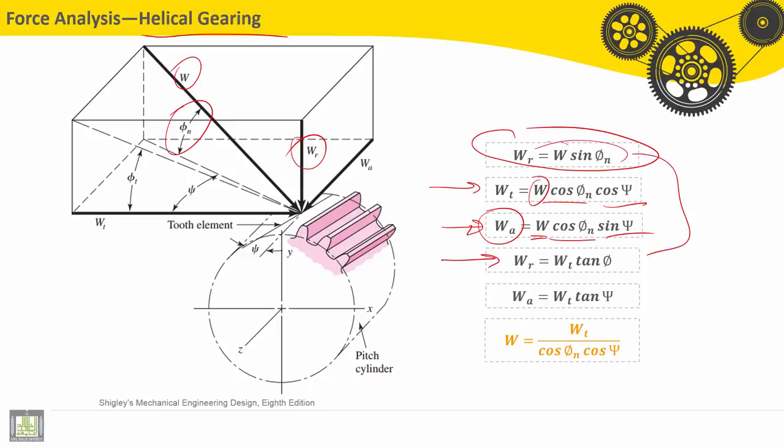Then, the WR, the radial force, is equal to tangent force multiply tangent phi. The axial force is equal to tangent force into tangent phi.